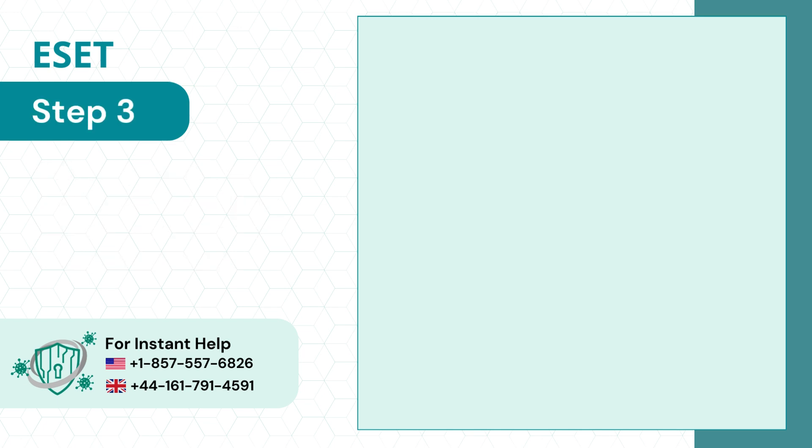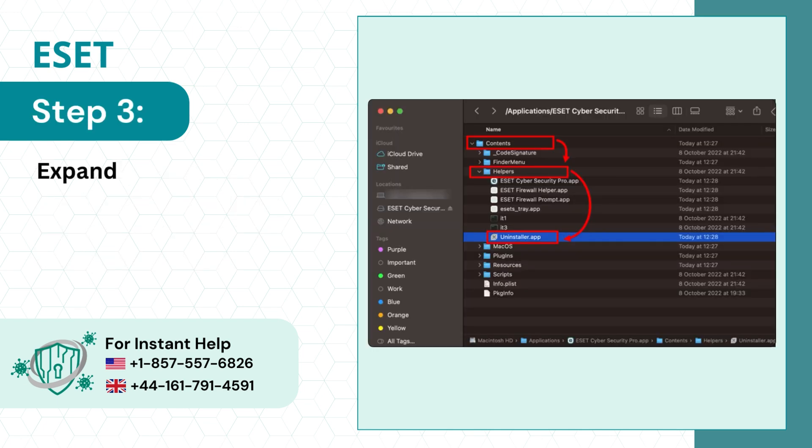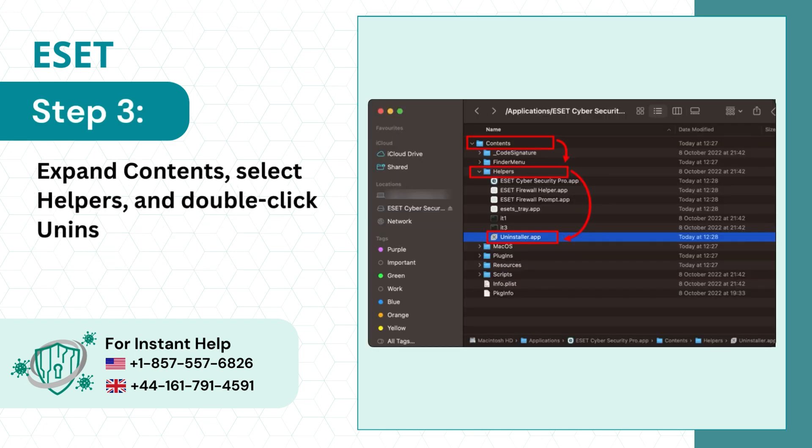Step 3: Expand Contents, select Helpers, and double-click Uninstaller.